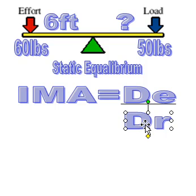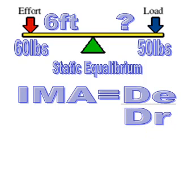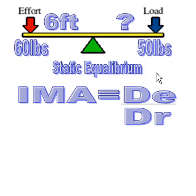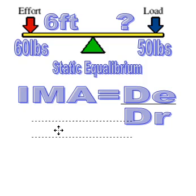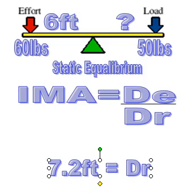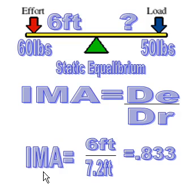Of course, if the lever is in static equilibrium, chances are it's going to be one. In this case, our distance of effort is six feet, and we just calculated that our distance of resistance is 7.2 feet. So we have six feet divided by 7.2 feet. The ideal mechanical advantage is six feet divided by 7.2 feet, which equals 0.833.